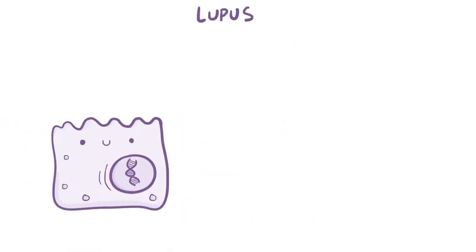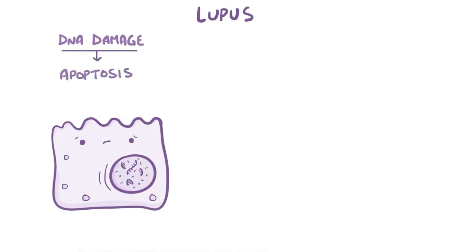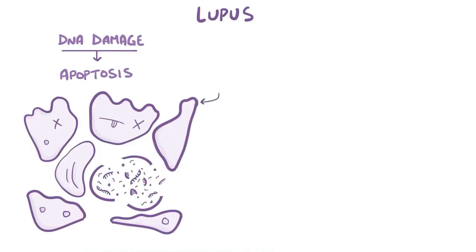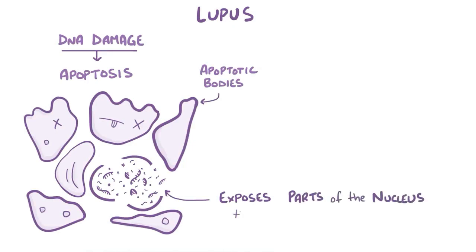In lupus, some cells have their DNA so badly damaged that the cell undergoes programmed cell death, or apoptosis, and it dies. This produces apoptotic bodies and exposes the insides of the cell, including parts of the nucleus like DNA, histones, and other proteins, to the rest of the body.